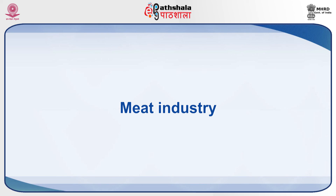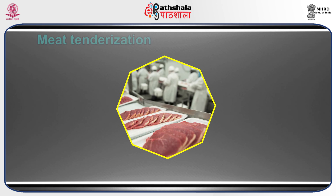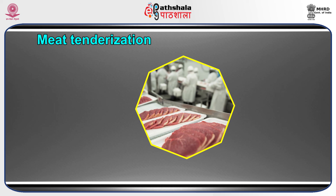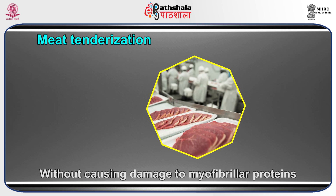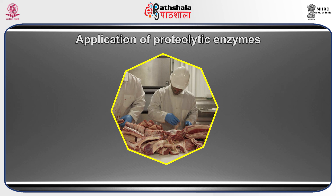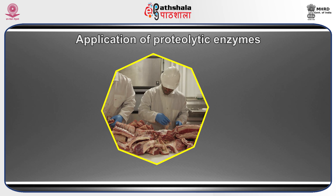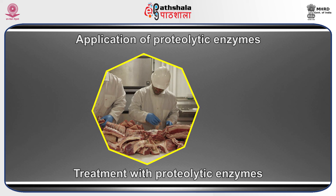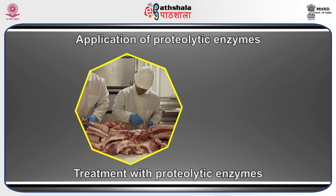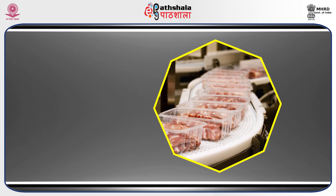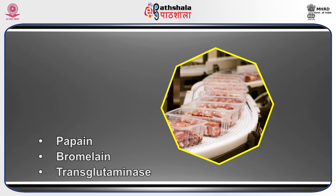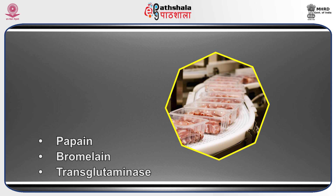In the meat industry, meat tenderization is carried out either physically or chemically to decrease the proportion of detectable connective tissue without damaging myofibrillar proteins. Application of proteolytic enzymes has become one of the most popular methods of meat tenderization, due to their effective action over a wide range of temperatures and pH. The enzymes most often used in meat processing are papain, bromelain, transglutaminase, and to a lesser extent ficin derived from the fig tree.